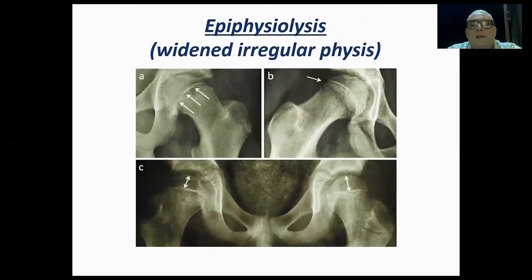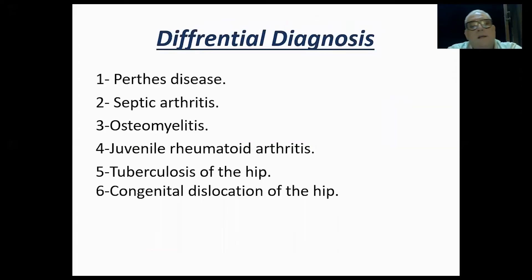The widened epiphysis shows resorption of bone around the epiphysis and a decreased height of the physis. In your differential diagnosis, you have to consider Perthes disease, painful conditions of the hip, septic arthritis, osteomyelitis, juvenile rheumatoid arthritis, tuberculosis, and neglected congenital dislocation of the hip.